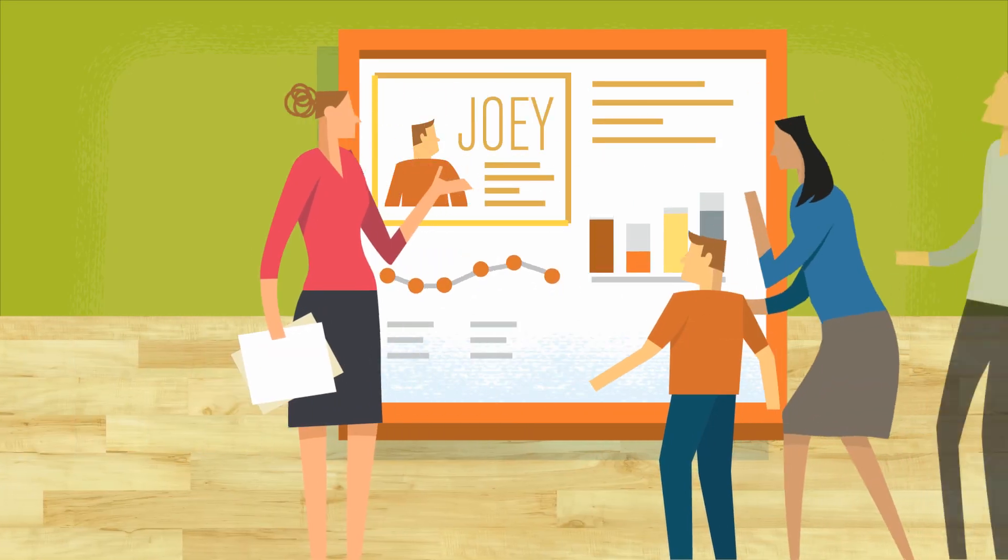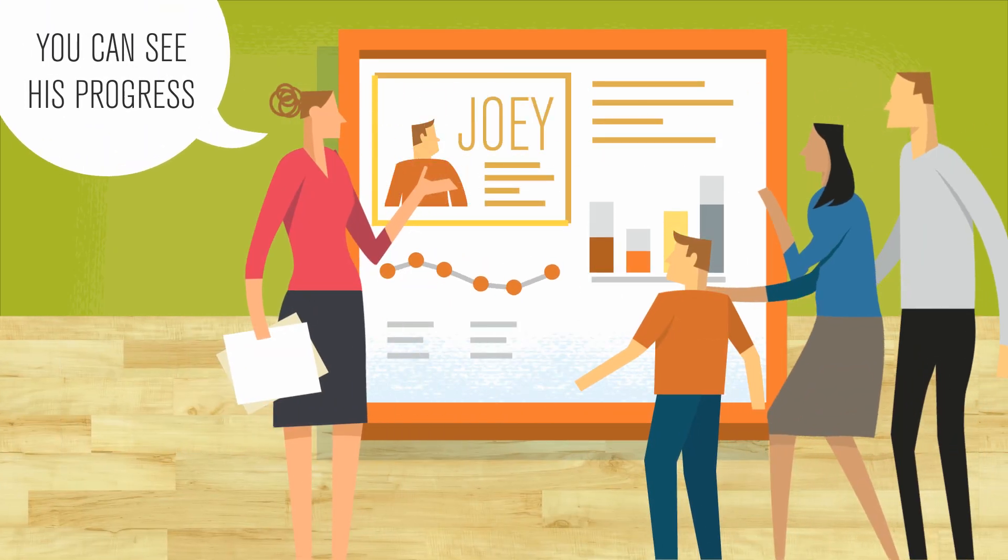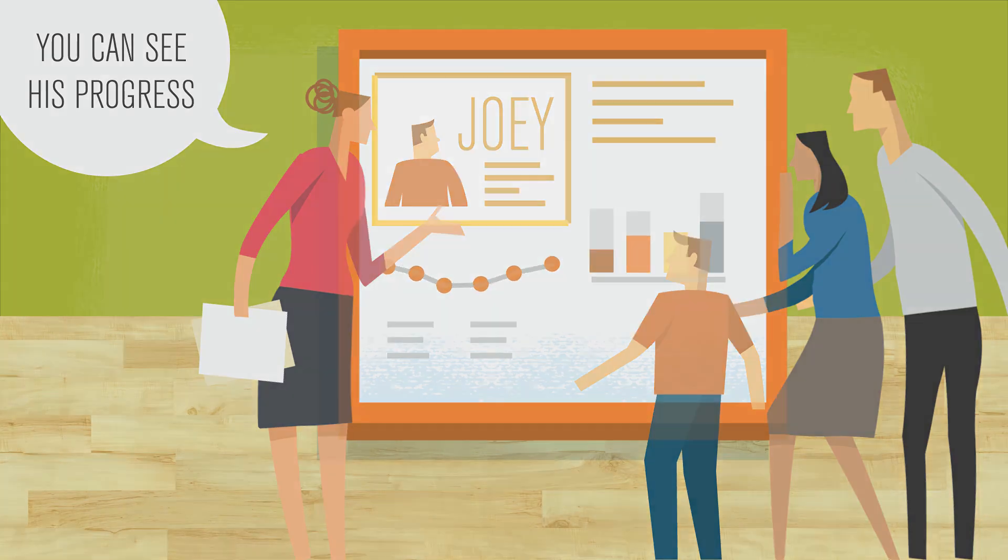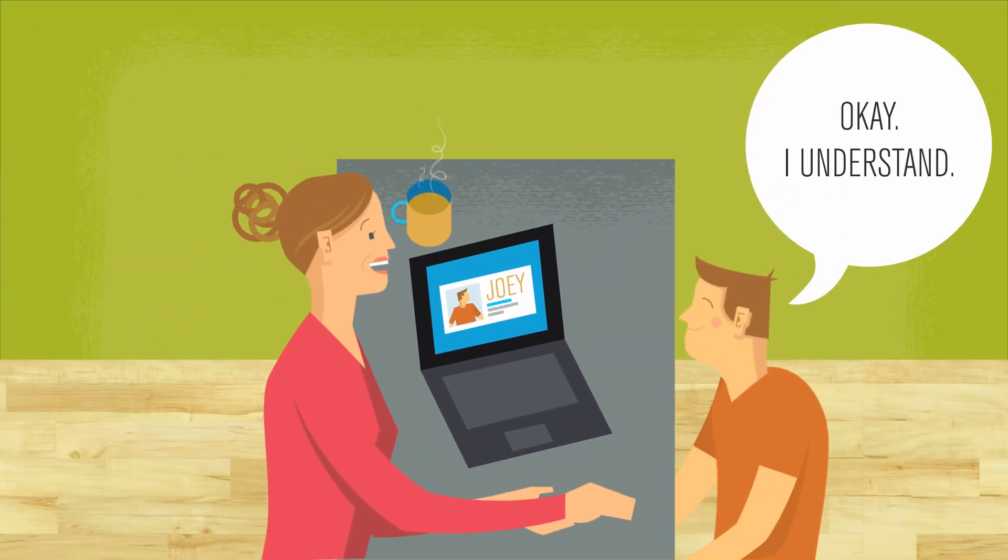Ms. Bullen uses data about Joey's performance to show his parents what he's learning, how he's growing, and where he may be struggling. She also talks with Joey about his own data, and they work together to set goals.